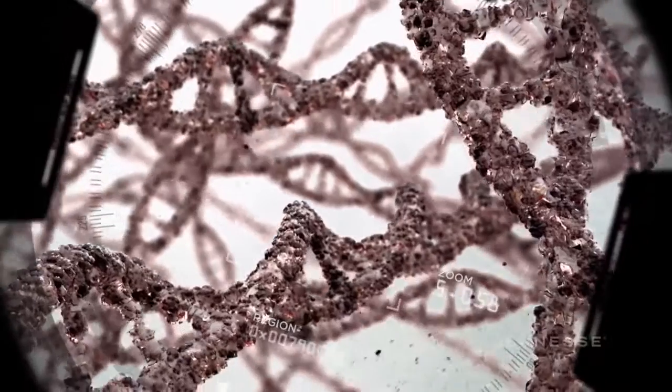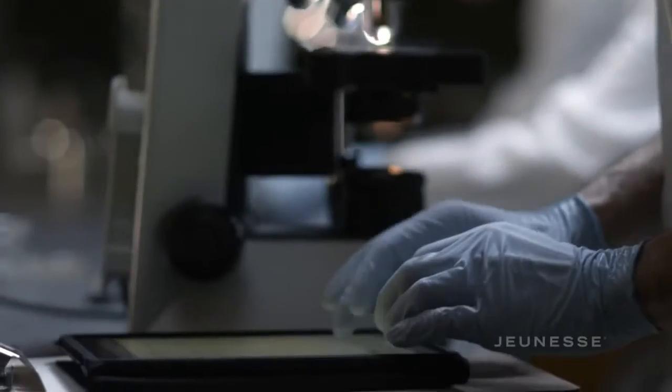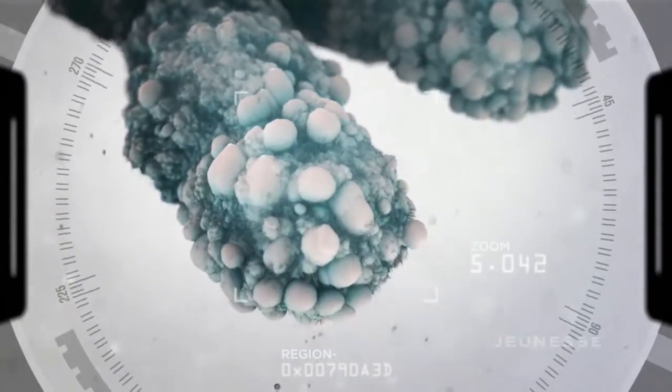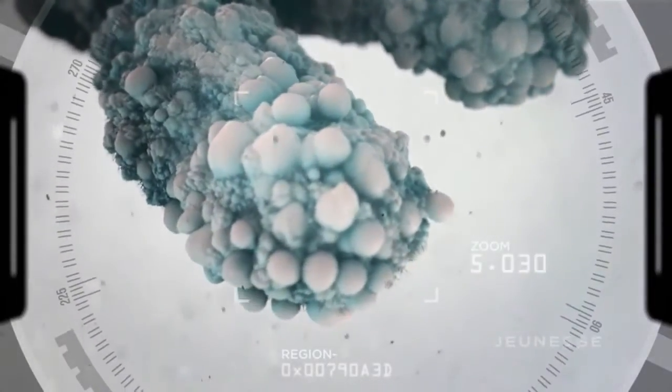Telomeres are made of repetitive DNA sequences that become the protective caps or ends of our chromosomes. Their duty is to protect our DNA.